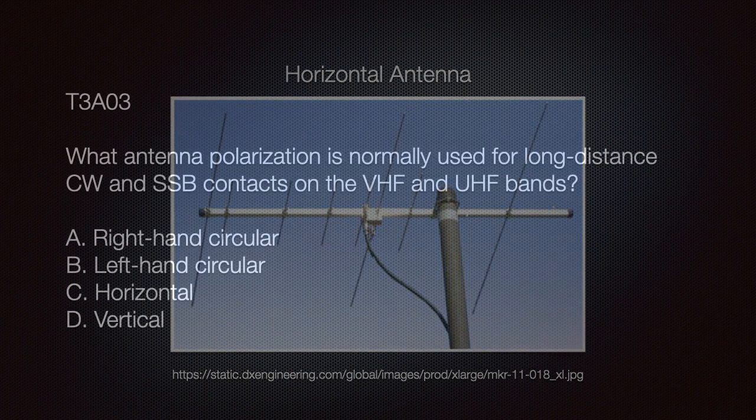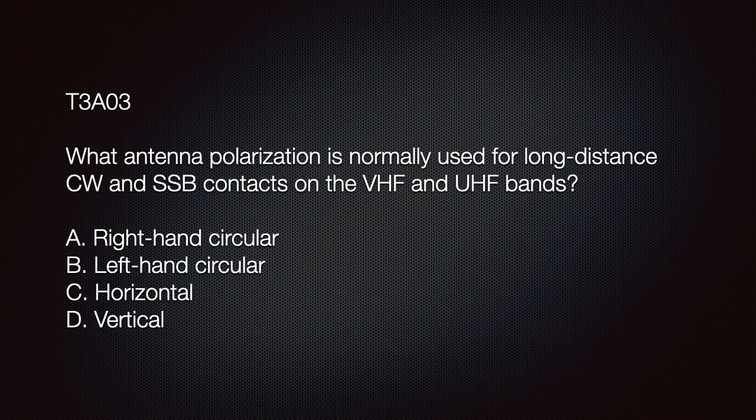The exam question: What antenna polarization is normally used for long-distance CW and single sideband contacts on the VHF and UHF bands? Options: A — right hand circular; B — left hand circular; C — horizontal; D — vertical. The correct answer is C: horizontal.